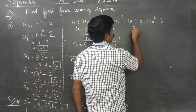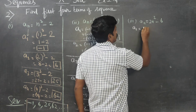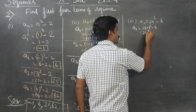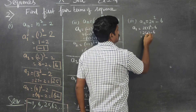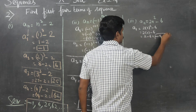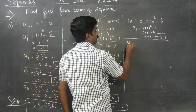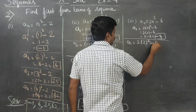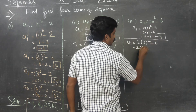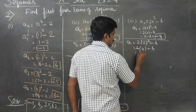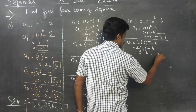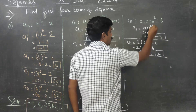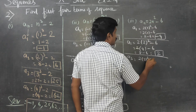We start with A1: 2 into 1² minus 6 = 2 minus 6, answer is minus 4. Coming to A2: 2 into 2² minus 6 = 2 into 4 minus 6 = 8 minus 6, answer is plus 2.